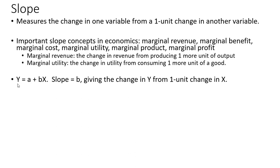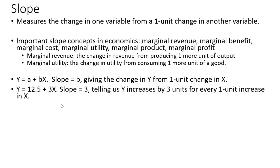Here we have a general linear functional form: y equals a plus bx. y is a variable, x is a variable, and b is the slope — it gives the change in y from a one unit change in x. For example, with y equals 12.5 plus 3x, the slope is 3, telling us y increases by three units for every one unit increase in x. Alternatively, y would decrease by three units for every one unit decrease in x.